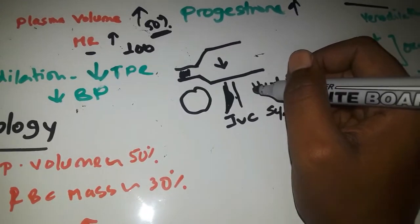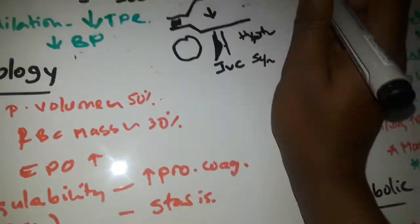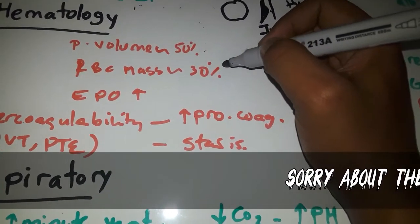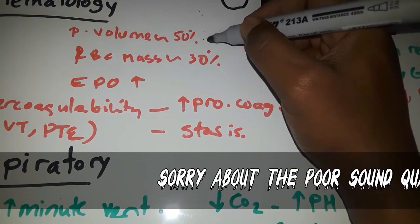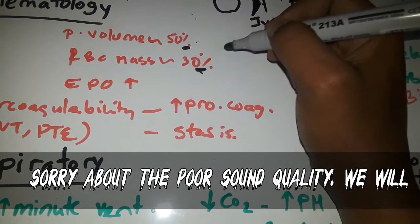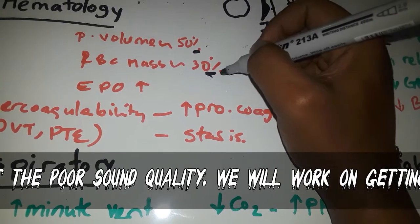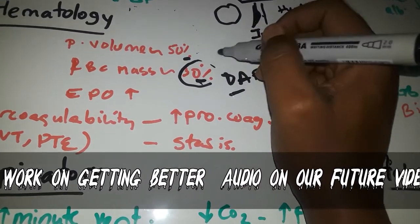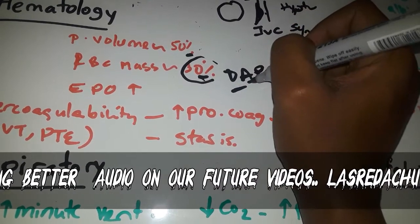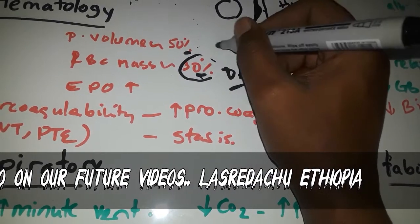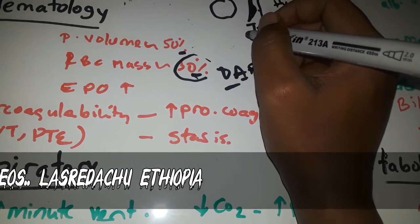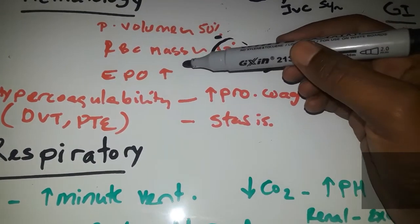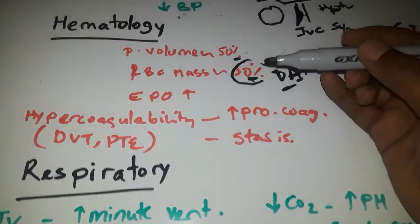Plasma volume expands more than RBC mass, so there is dilutional anemia of pregnancy. Erythropoietin hormone will be increased to stimulate RBC production.